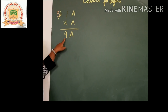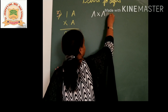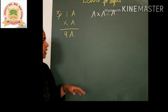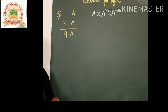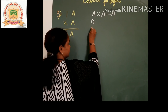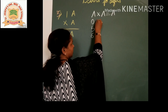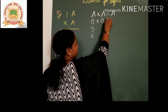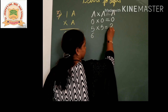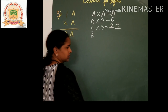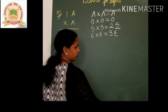So the third problem: 1A multiplied by A gives 9_. It means A multiplied by A gives a unit digit of A itself. In such a case, there are only 3 possible values of A — that is 0, 5, or 6. You know that 0 times 0 gives 0; 5 times 5 is 25, so 5 in the unit place; 6 times 6 is 36, so 6 in the unit place.